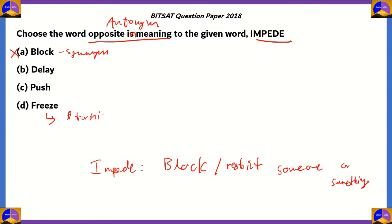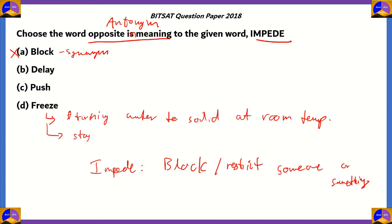Option D — 'freeze' — can refer to the freezing of water, turning water to solid at low temperatures. 'Freeze' can also refer to staying still due to any reason — for example, if you are afraid you can say you are frozen with fear because you were staying still without doing anything. So option D is also incorrect because its definition is not opposite in meaning to 'impede,' which means to block or resist someone. Option B — 'delay' — means getting late, making something happen later than usual.